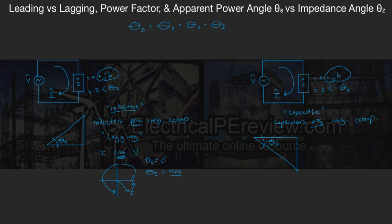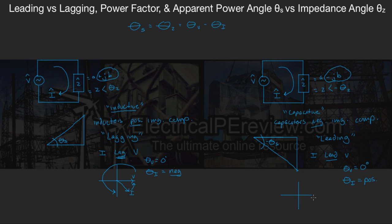Now let's compare it to our capacitive circuit. Another word for capacitive is leading. We can call this a leading system or leading circuit. Simply, I leads V — I is in front of V. If theta V is set to zero for reference, for I to lead V, the phase angle of I must be positive — placing I somewhere above the x-axis. Since it's a positive system, they rotate counterclockwise, and V is now behind I, trying to catch up, which makes it a leading system.